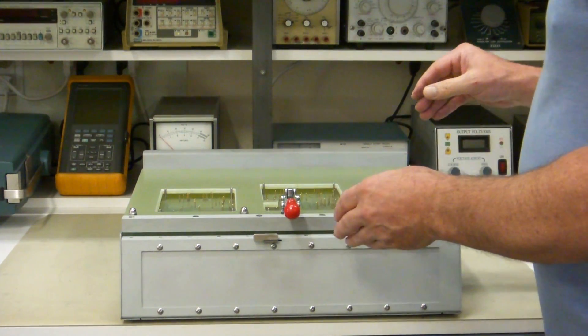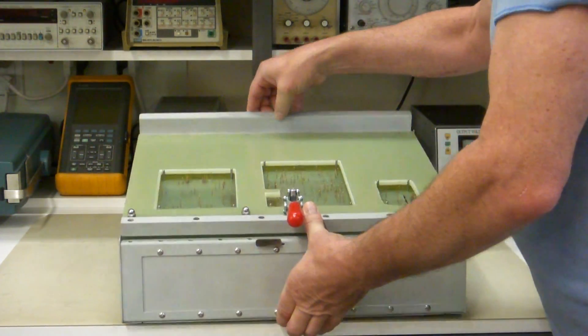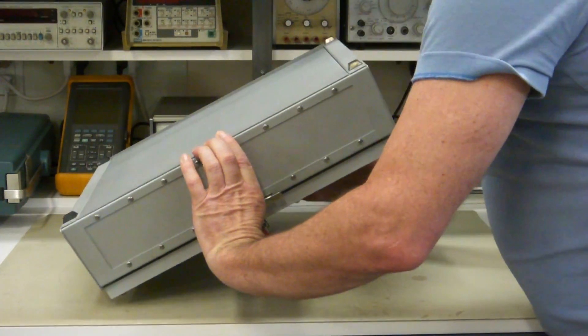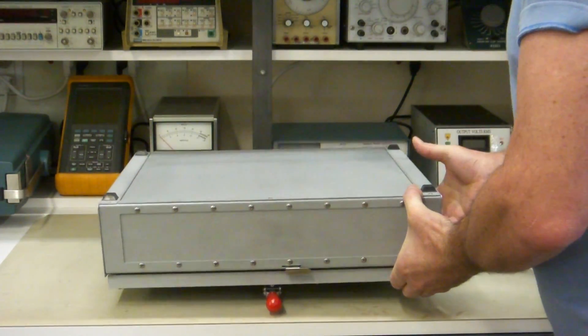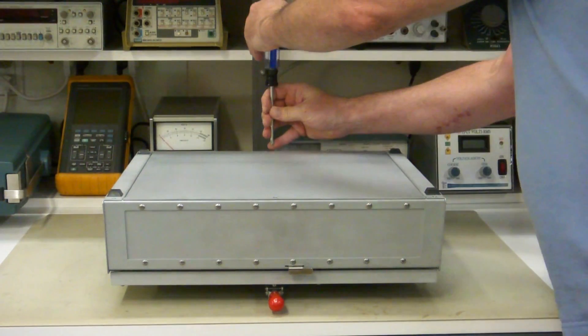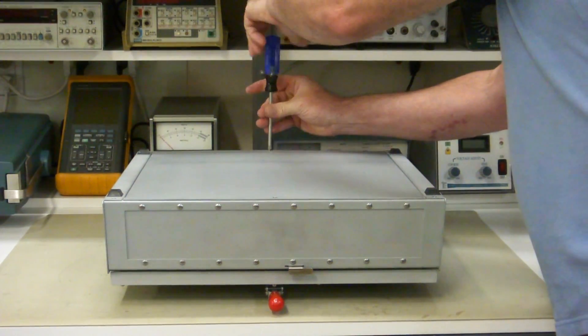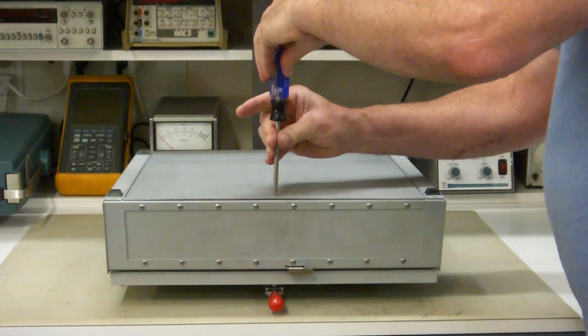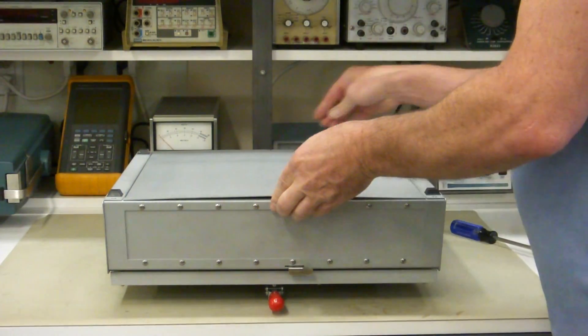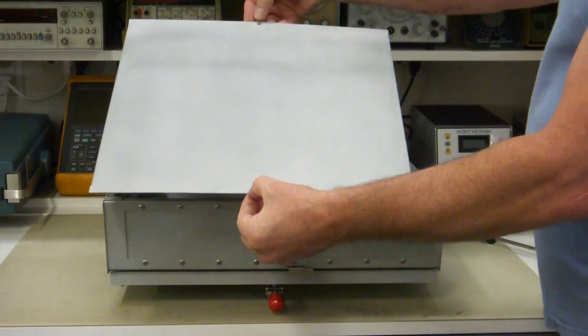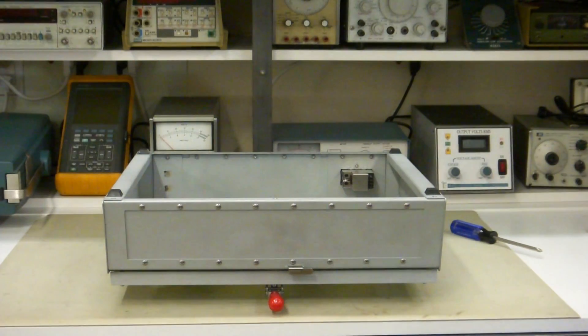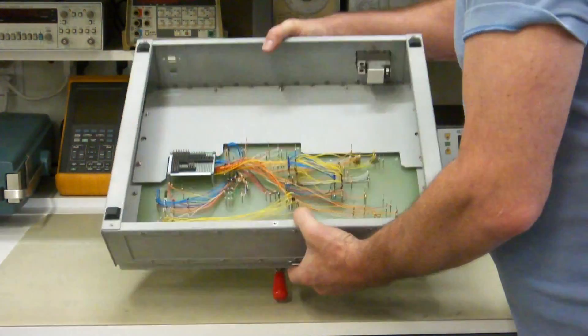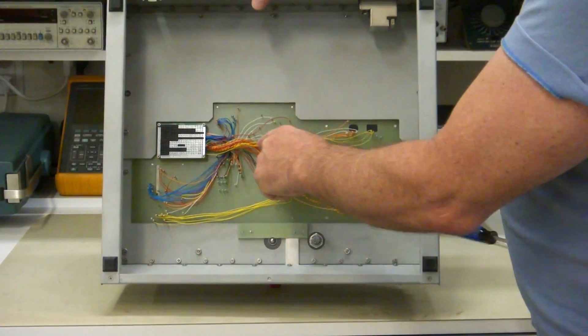Now for the bed of nails plate, let's start with the wiring. If you wanted to change the wiring, you wouldn't need to take the bed of nails plate out. You would just remove this bottom cover here and work on the wiring. So the bottom cover comes out with just two screws here and here. It lifts right out. And now you have access to all the wiring inside the fixture.